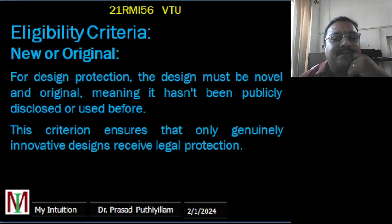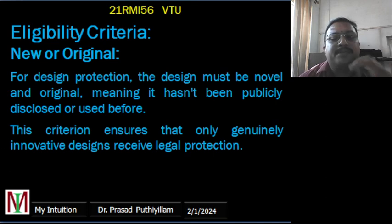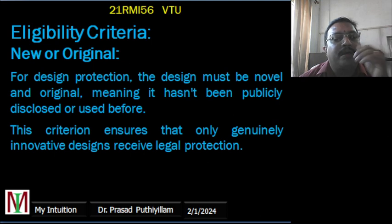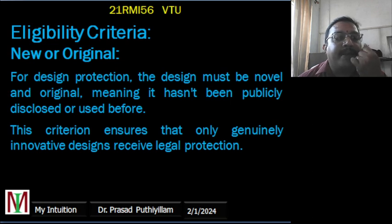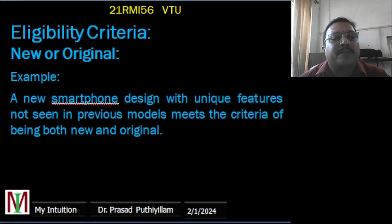The eligibility criteria for design protection require that the design must be new and original, meaning it has not been shown or used publicly before. One must apply for design patent and protection before public use. This rule ensures that only truly innovative designs are legally protected. For example, a new smartphone design with unique features not seen in previous models meets the criteria of being both new and original.